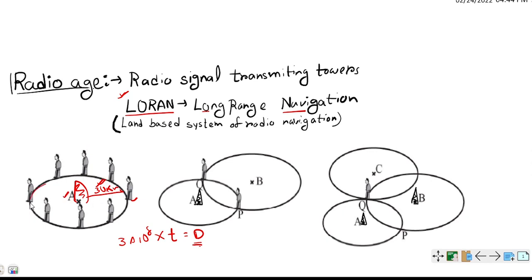Now he can be anywhere in this circle because his position is not defined precisely. Now let us introduce another tower B. And he finds out that he is now 30 kilometers away from A and 40 kilometers away from B. So now these two circles will intersect in two positions, that is P and Q. Now this P and Q is the position of the observer.